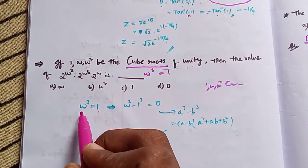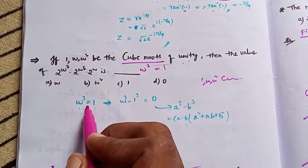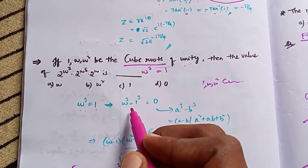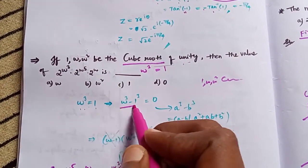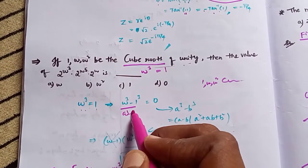We write ω³ minus 1 equals zero on the left-hand side, which factors using the a³ minus b³ formula, giving us the property that 1 plus ω² plus ω equals 0.